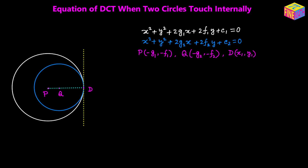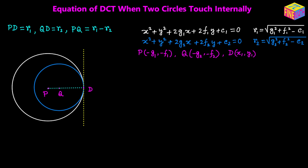Next we are going to see how to find the coordinates of D, but first let's quickly note down the radius of each circle. Let's assume R sub 1 is the radius of the larger white circle and R sub 2 is the radius of the smaller blue circle. Also, PD will be the radius of the larger circle which is R sub 1, QD will be the radius of the smaller circle which is R sub 2, and PQ will be R sub 1 minus R sub 2.